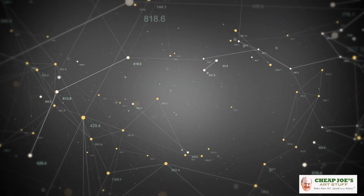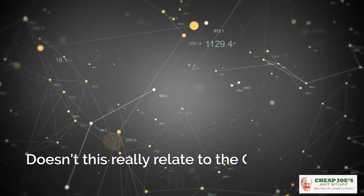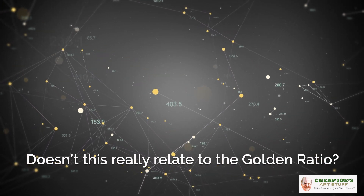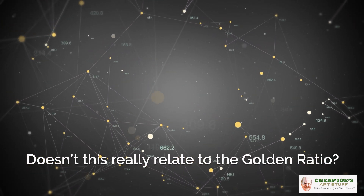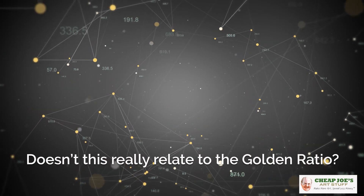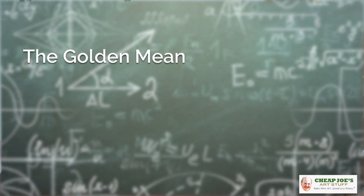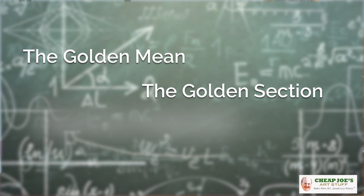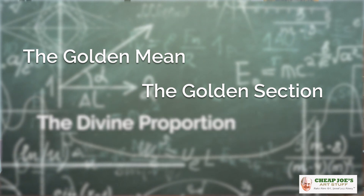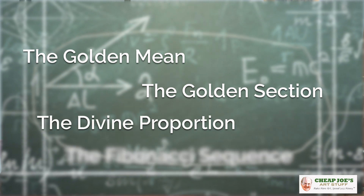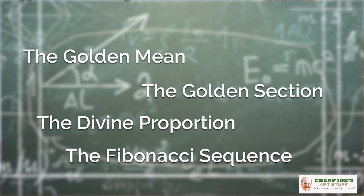The viewer question was asking: doesn't this really relate to the golden ratio? Yes it does. If you aren't familiar with the golden ratio, I definitely suggest that you Google it and check it out. It goes by many other names — you'll see it called the golden mean, the golden section, the divine proportion, and the mathematical part is called the Fibonacci sequence.